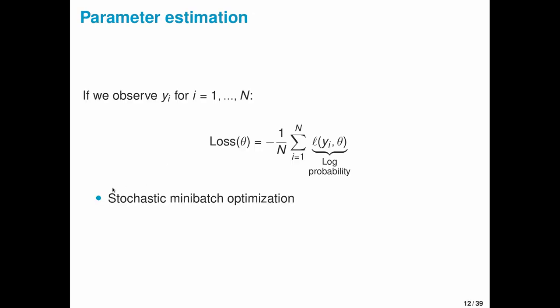For the model that I'll discuss today, parameter estimation proceeds by minimizing a loss function that can be written in this form. It's an average over n examples and we're averaging some differentiable log probability. The nice thing about writing a loss function like this is it permits stochastic minibatch optimization, so that means we only have to load subsets of the data at a time. We never have to load the entire data set into memory, and this allows us to scale to large data sets.